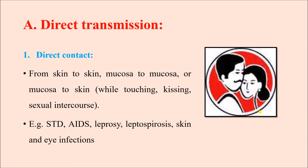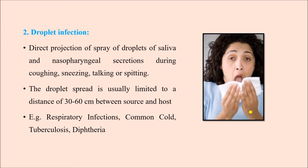Diseases transmitted by direct contact include sexually transmitted diseases including HIV infection or AIDS, leprosy, leptospirosis, and different skin and eye infections. Next is droplet infection — direct projection of sprays of droplets of saliva and nasopharyngeal secretion during coughing, sneezing, talking, or spitting. The droplet spread is about 30 to 60 centimeters between the source and host. Infections transmitted by droplet include mainly respiratory infections such as the common cold, tuberculosis, diphtheria, measles, and chickenpox.